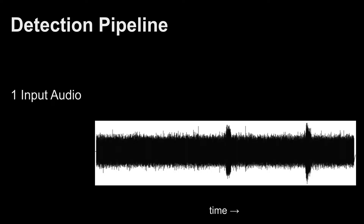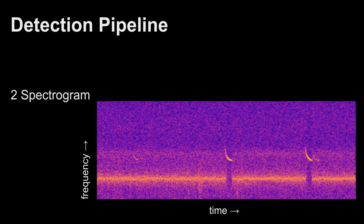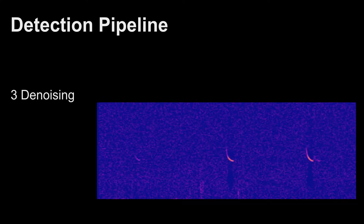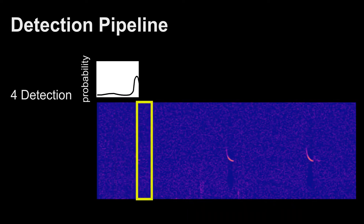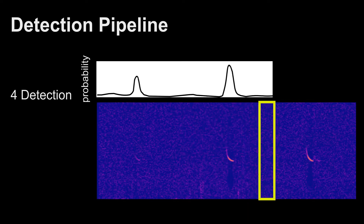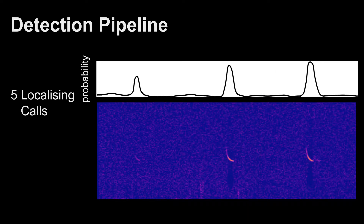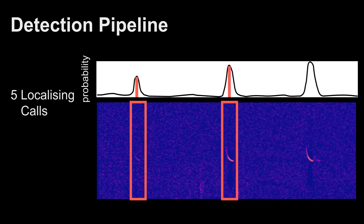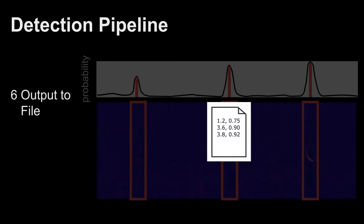We present a fully automated tool for detecting search phase echolocation bat calls in noisy audio data. Our machine learning based detection pipeline consists of a convolutional neural network that is trained to detect individual calls.